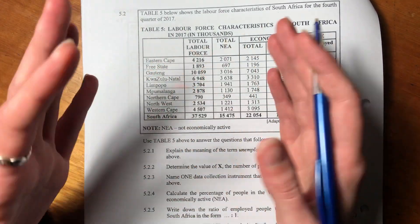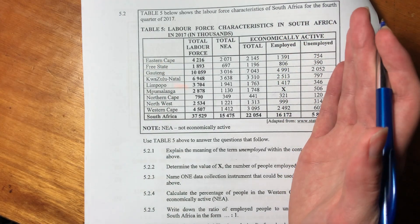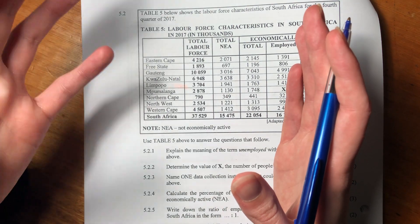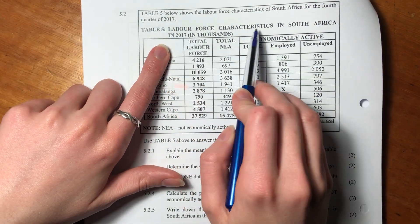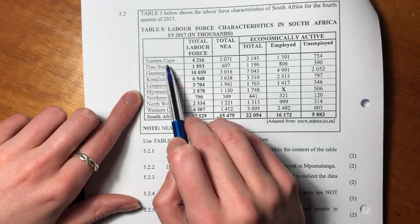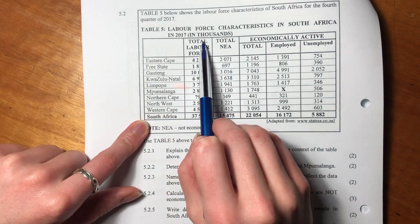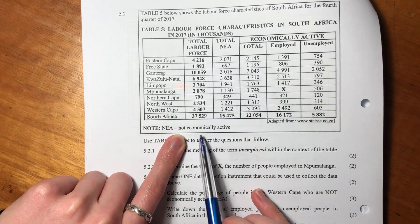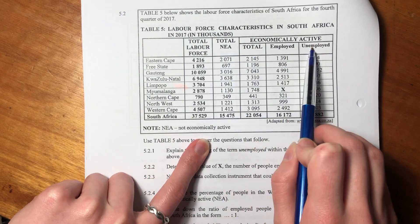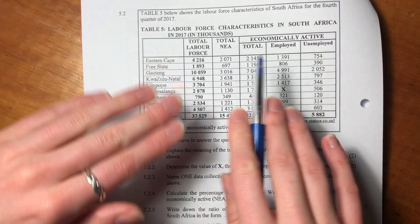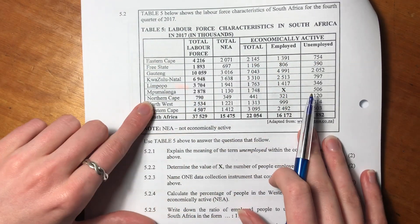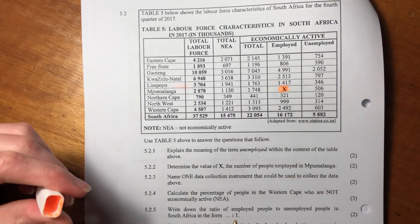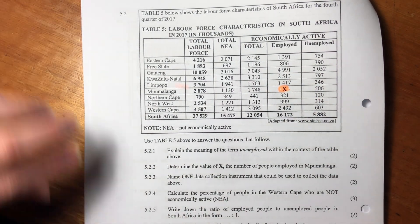That just means the last three months of 2017. Remember, a year can be split into quarters — 12 divided by 4, each quarter is three months. We have the different provinces, the total labor force, those who are NEA (not economically active), and those that are economically active. There's a missing value we'll probably need to calculate.